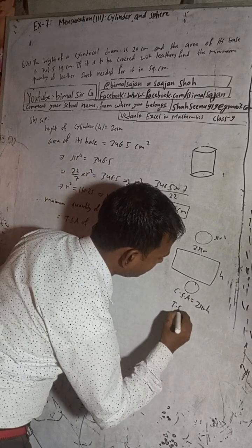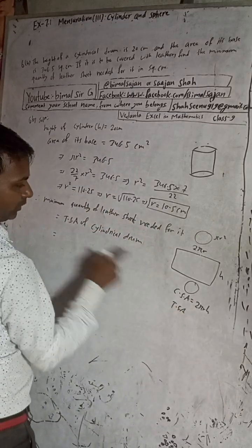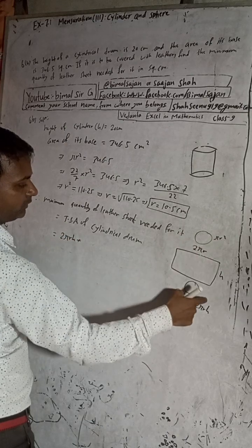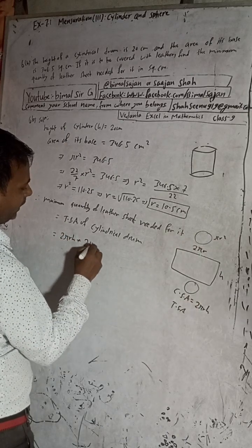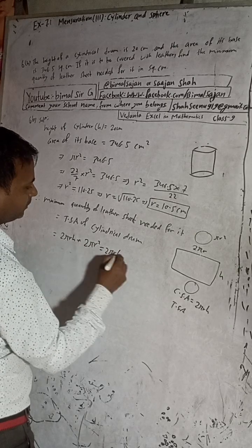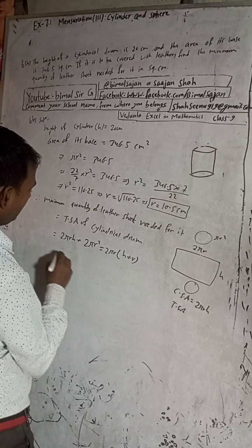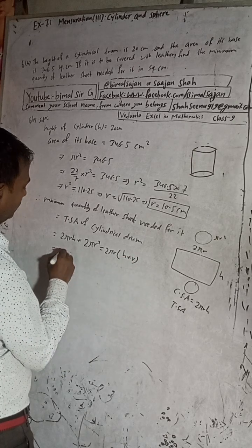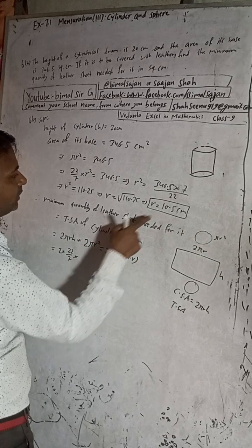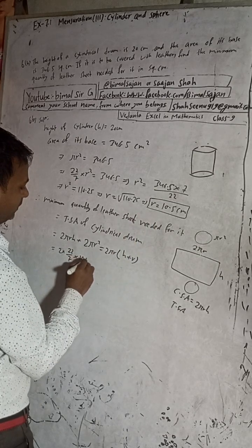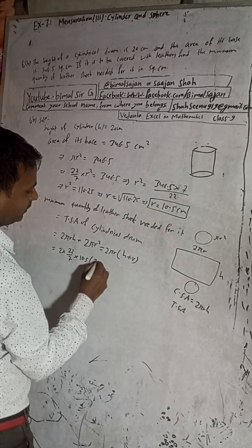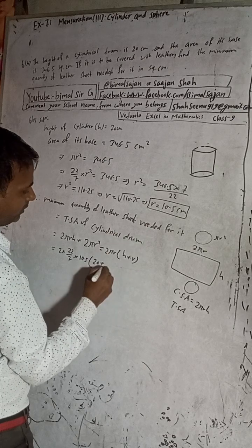This will be total surface area: curved surface area 2πrh plus area of the two circles, 2πr². And now, 2 × π value 22/7 × r value 10.5 × h, what is h value? h value is 20 cm, plus r value is 10.5.